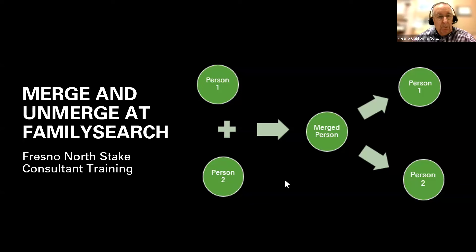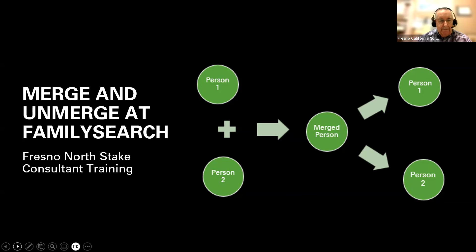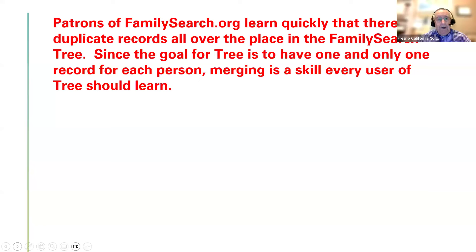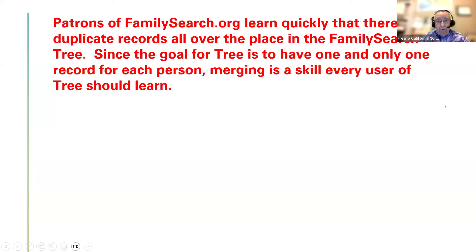Welcome back. We're going to talk about merging and unmerging at FamilySearch tonight. If you're a patron of FamilySearch, you learn quickly that you're going to need to handle duplicate records and replace them. The easiest way to do that is through merging.